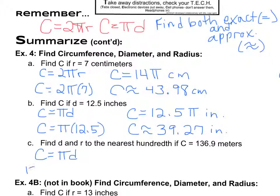136.9 is going to go in for C. This time, remember π is a number, so if I have π times D equals some number, then to solve for it, I'm going to divide both sides here by π. On your calculator, you're going to take and divide to get the diameter: 136.9 divided by your π key.